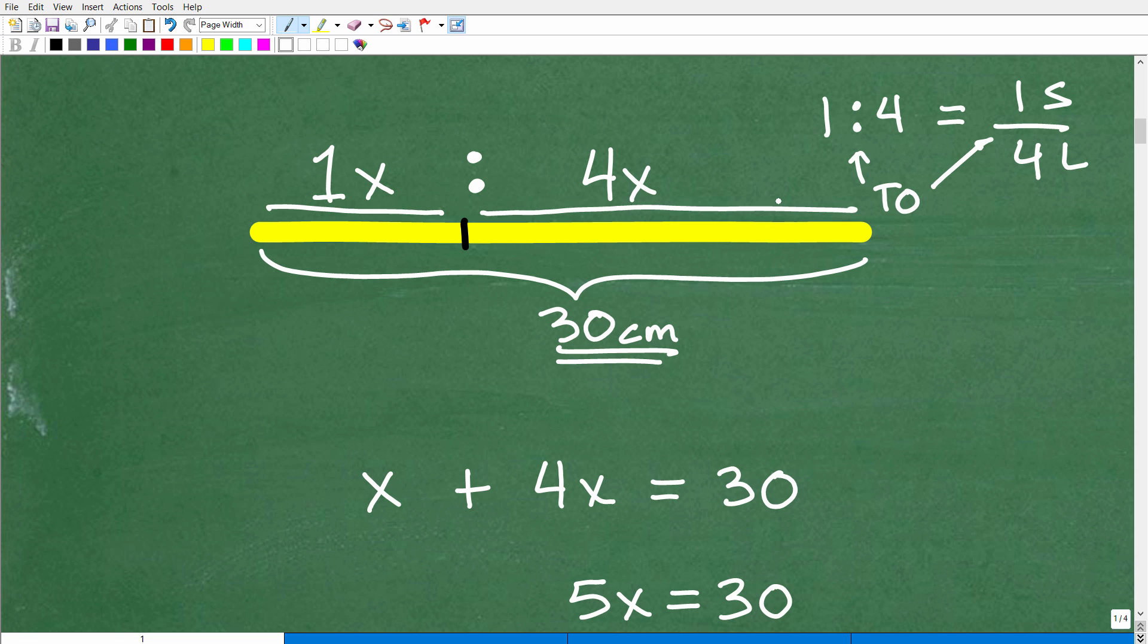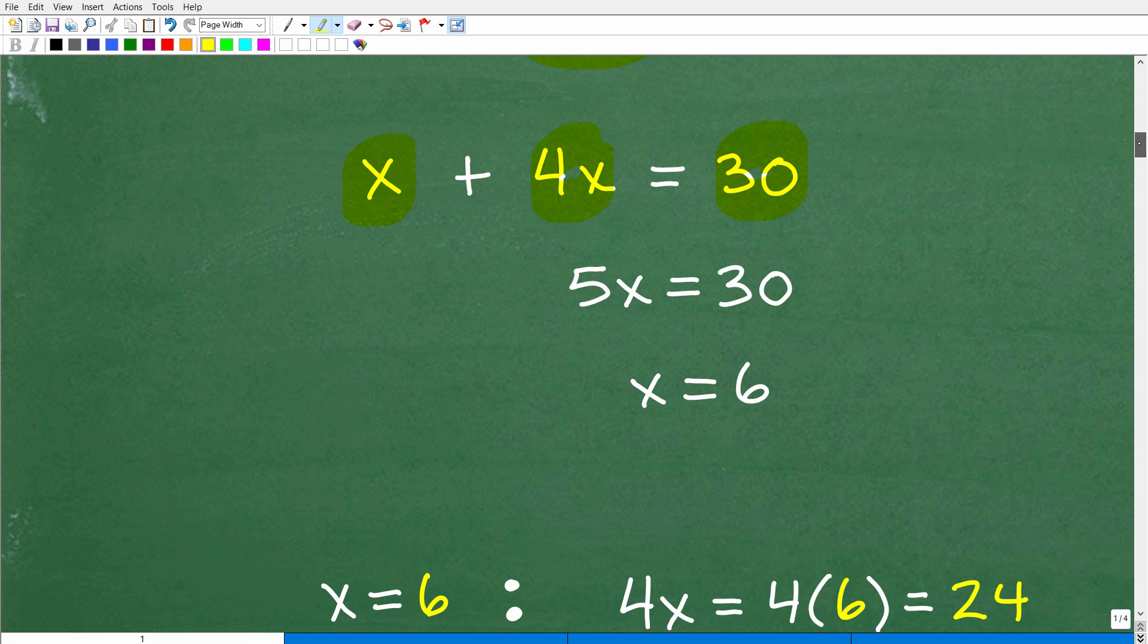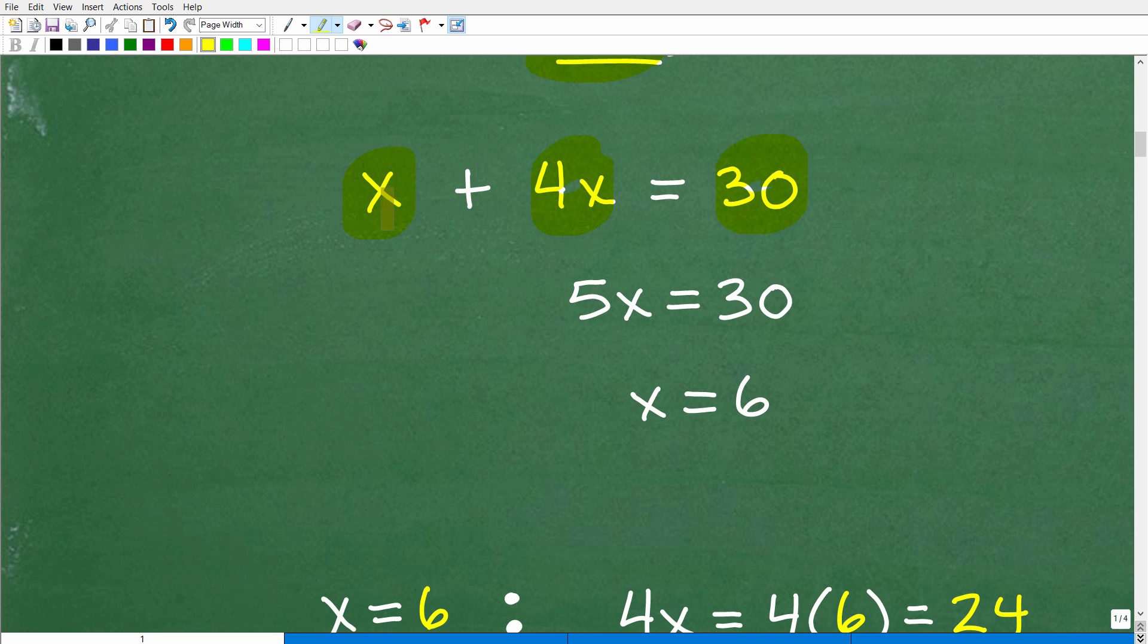So we're going to use algebra to solve this particular problem. So here we have the small length. Here we have the longer length. We know the total length is 30. So we can write ourselves a lovely algebraic equation. So we have x, this length here, plus 4x is equal to the total length of this stick, which is 30 centimeters. So we can go ahead and solve this basic equation. So x plus 4x is 5x. 5x is equal to 30.